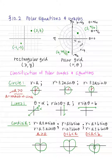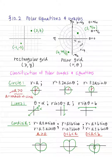Hello everyone, we're going to go over section 10.2, polar equations and graphs. So first, let's go with the difference between the rectangular system and the polar system. The rectangular grid goes in a crisscross pattern. There's one and only one way to express a point on the rectangular coordinate system. For instance, (2, 3) — there's only one (2, 3) in the whole entire plane.